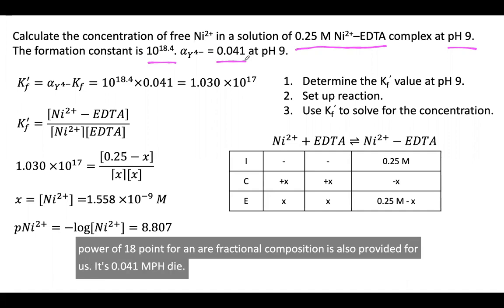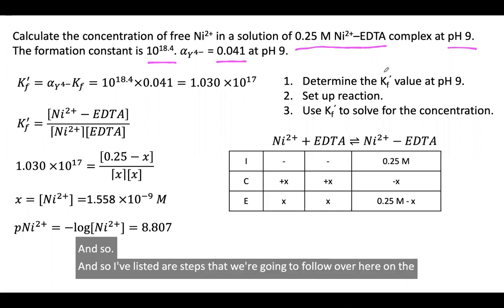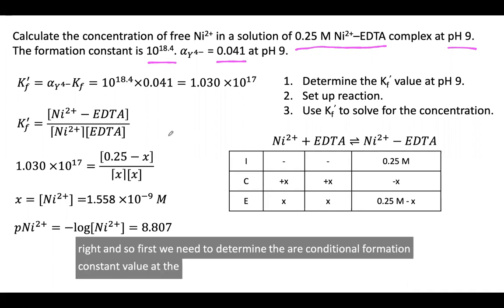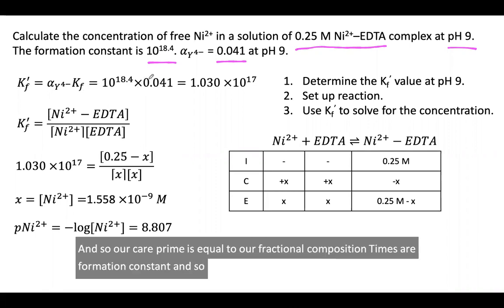I've listed our steps over here on the right. First we need to determine our conditional formation constant value at the intended pH. So K'f equals our fractional composition times our formation constant, 10 to the 18.4 times 0.041, and we get 1.030 times 10 to the 17th.